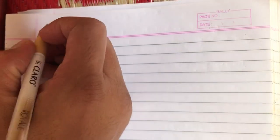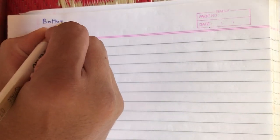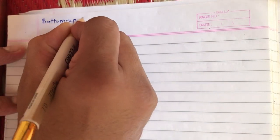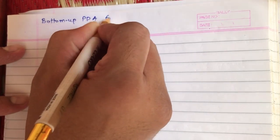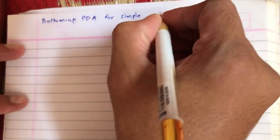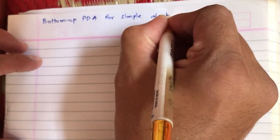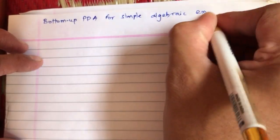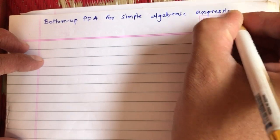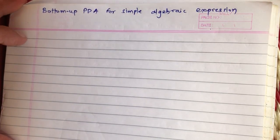Let us see and understand one example of bottom-up parsing. Let us construct a bottom-up PDA for simple algebraic expressions.